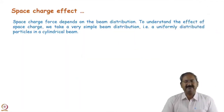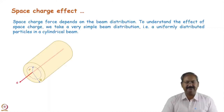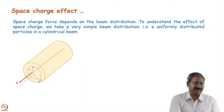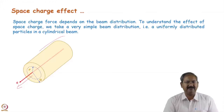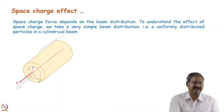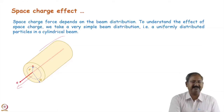Space charge force depends on the beam distribution because this is a collective phenomenon. We take a very simple uniformly distributed particle distribution in a cylindrical beam to understand how space charge forces change the dynamics. The beam propagation direction is shown, and the beam is uniformly distributed. Longitudinally it is very long, so there will be no longitudinal electric field — only a transverse electric field. We consider a particle at a distance r from the beam axis, while the beam radius is a.